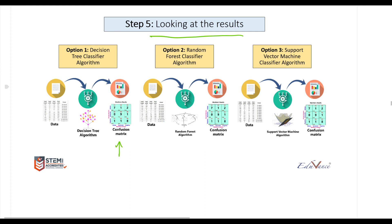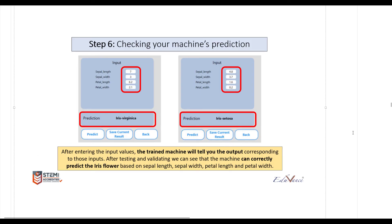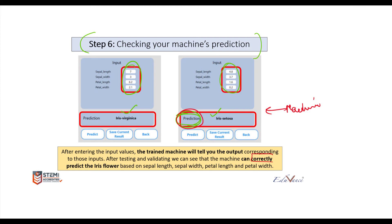Step number five is looking at the results. Since we are doing a classification, we will look at the confusion matrix — I will show you how to read it. The most important step is then to check your machine's prediction by feeding some values and checking the classification done by the machine. This will tell us whether our machine is predicting correctly.